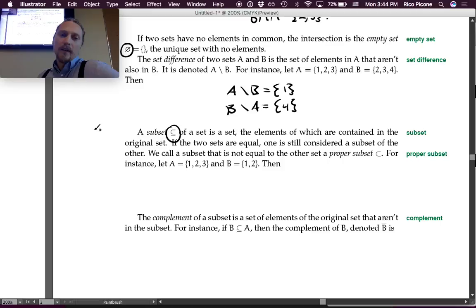A subset, which is denoted with this symbol, is a set the elements of which are contained in the original set. If the two sets are equal, one is still considered a subset of the other, which is kind of weird. That's like saying if you had a collection of 12 eggs and you're like, can you grab me a subset of those eggs, somebody just brought them all to you? You'd be like, I mean you're right, but that wasn't exactly what I was intending you to do.